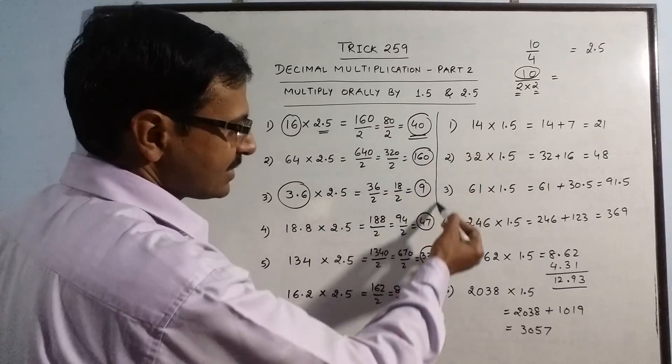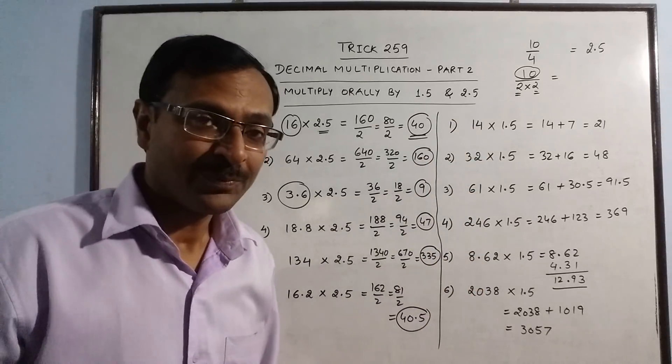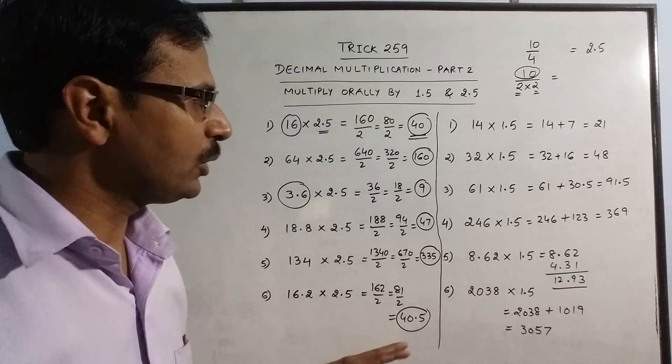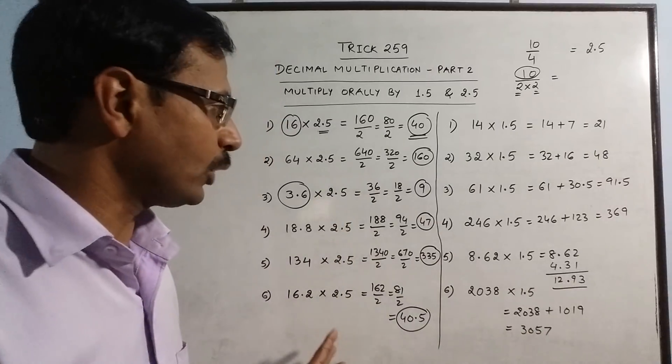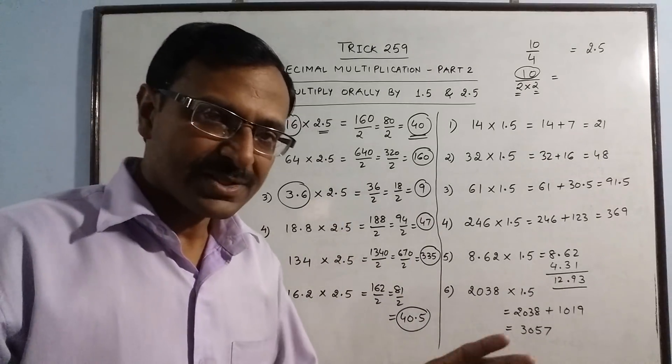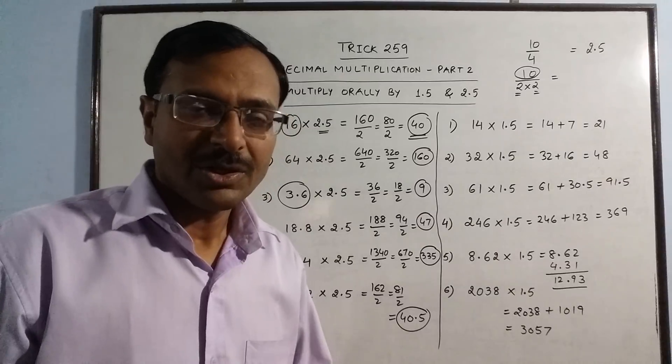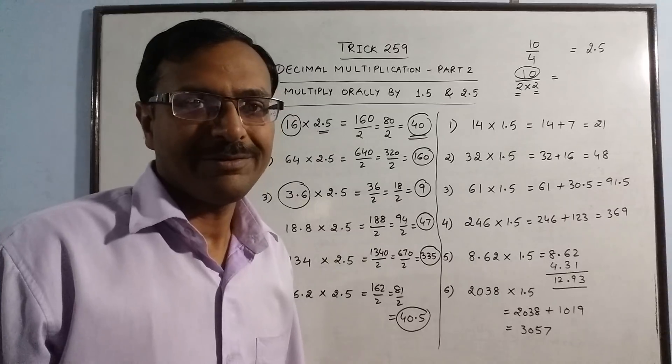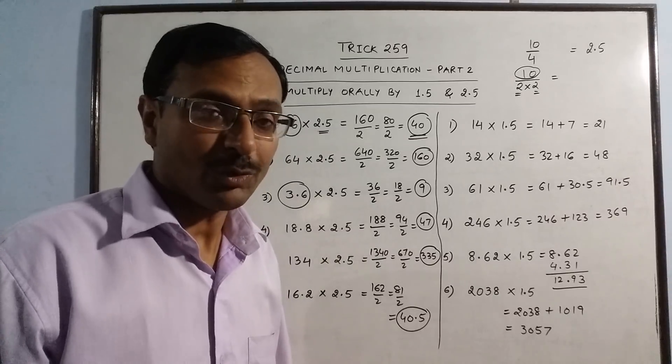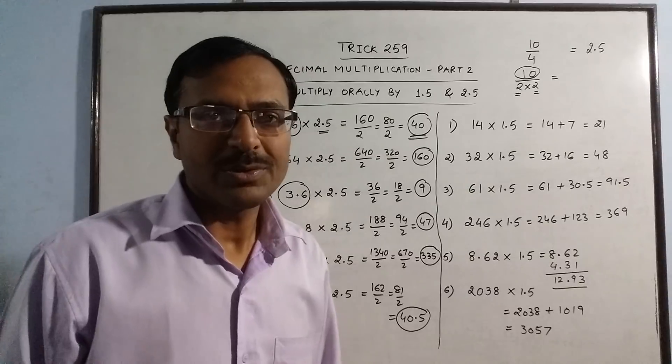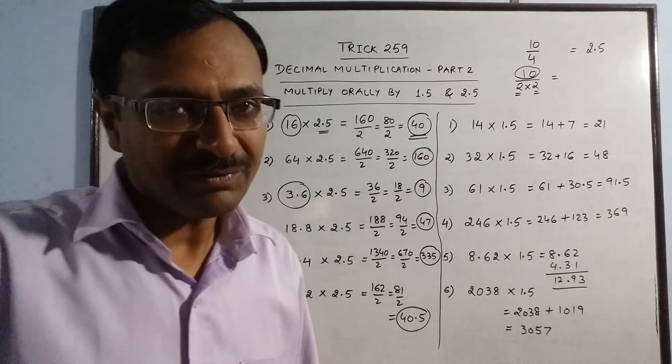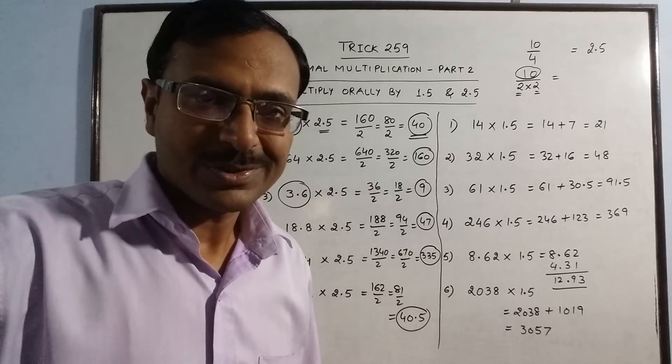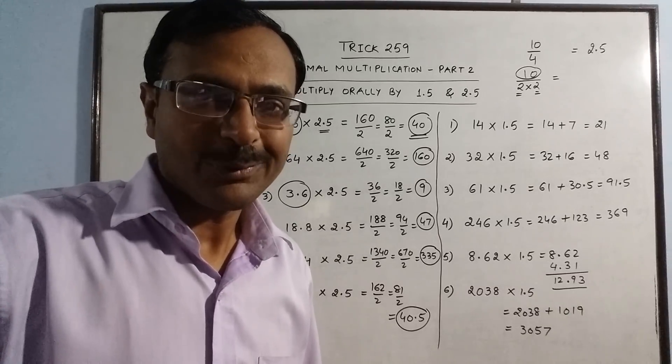Dear friends, this is an amazing video of a mental math trick in which I told you how to multiply numbers by 1.5 and 2.5. If you understand these concepts of mental mathematics, you can work out multiplication by 5.5, 7.5 very easily. I will be posting one or two more videos on decimal multiplication and simplification problems in my subsequent videos. Till then, keep sharing and subscribe the channel if you like it.